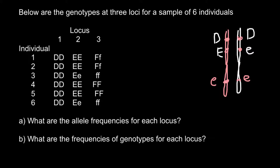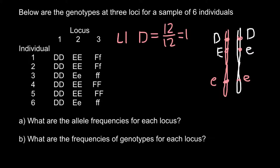At locus one, the allele frequencies would be 100% — we have only one type of allele. So at locus one, we have only allele D, and allele D is 12 out of 12, which equals one, or 100%.